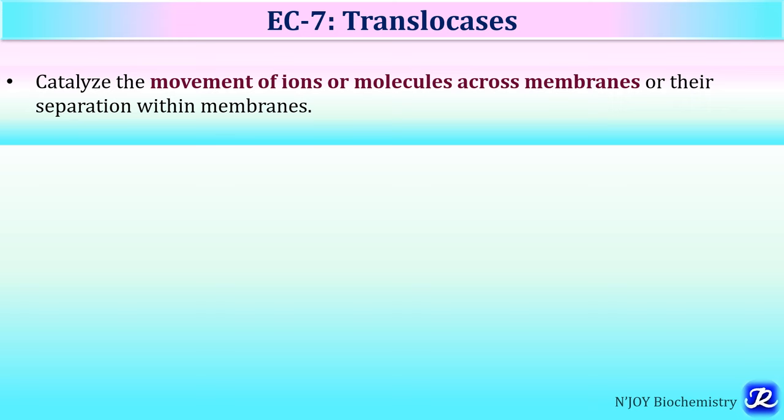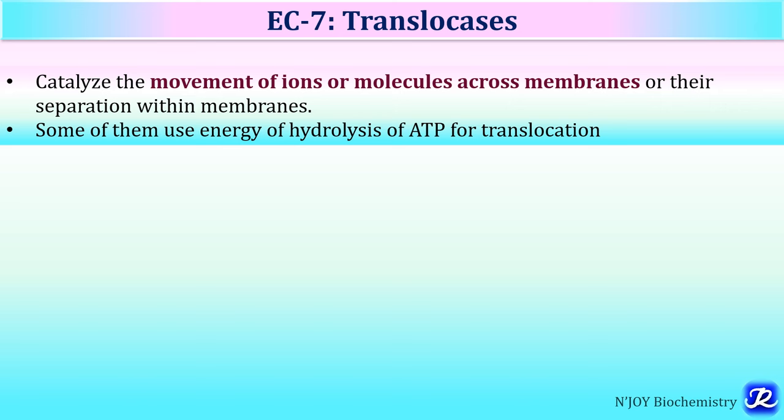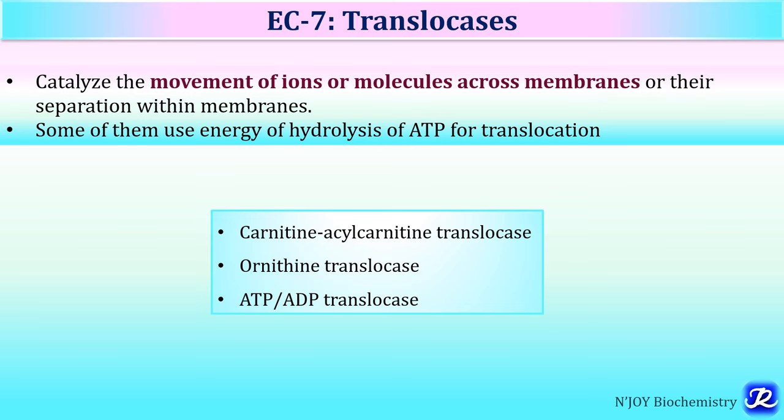EC7 includes translocases. They catalyze the movement of ions or molecules across membranes or their separation within molecules; some use ATP hydrolysis energy for translocation. Examples include carnitine-acylcarnitine translocase, which transports fatty acids from the cytosol into mitochondria for beta-oxidation, as fatty acids cannot cross the mitochondrial membrane directly. Other examples are ornithine translocase and ATP-ADP translocase.